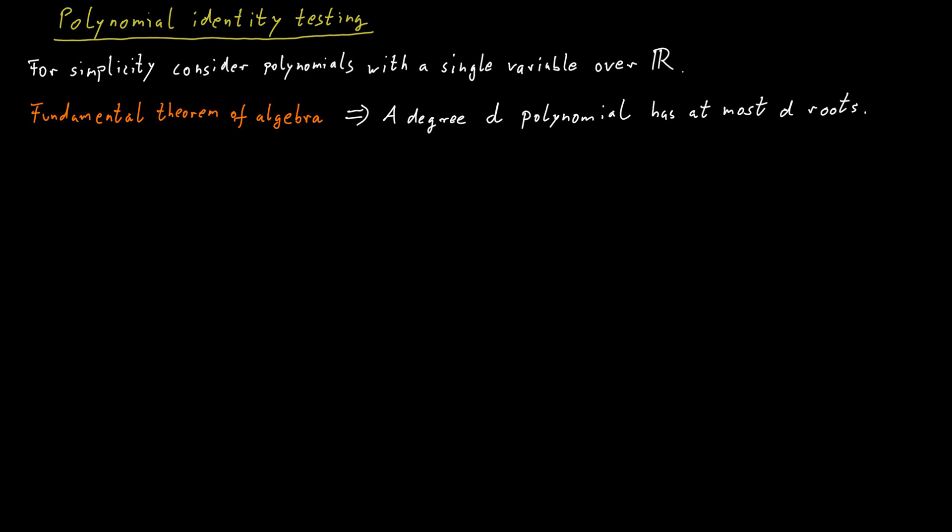But for our purposes, it's enough to know that there are at most d different values for the variable that would lead for this polynomial to be equal to 0, unless of course, if the polynomial is equal to 0 everywhere. So we should respond yes in our algorithm.